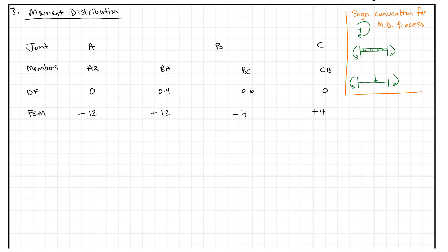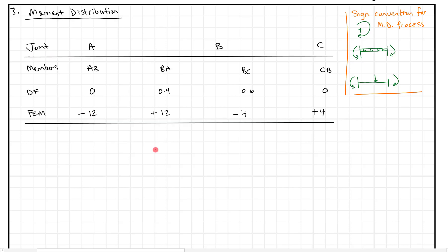It's important to remember that any time we see a moment in this process, if it's negative it means counterclockwise, and if it's positive it means clockwise. To complete our table, I'll draw some lines in, and then we're ready to distribute. I like to start by looking at joint B, so let's take a quick free body diagram of joint B.